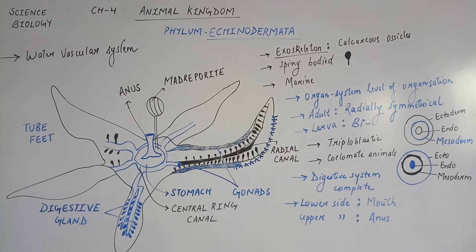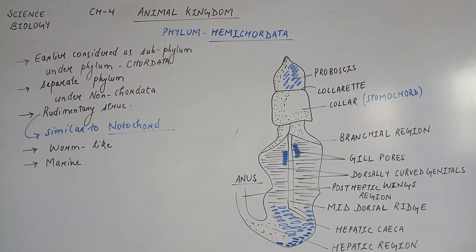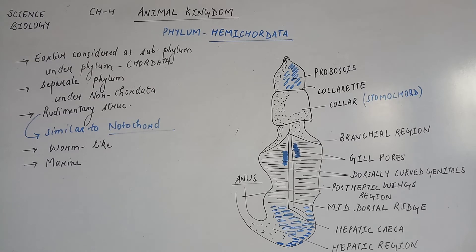Now we will talk about Phylum Hemichordata. Earlier, it was considered as a subphylum under Phylum Chordata. Hemichordata Phylum was known as a subphylum of Chordates. But now it is known as a separate phylum under non-chordates. The reason it was placed under Chordates before was because it had a rudimentary structure called Stomochord, which was considered similar to a notochord. But then it was recognized as a different structure, so it was placed as a separate phylum under non-chordates.